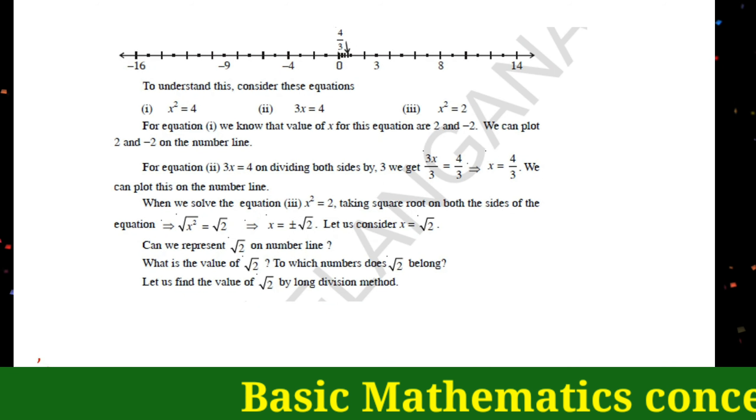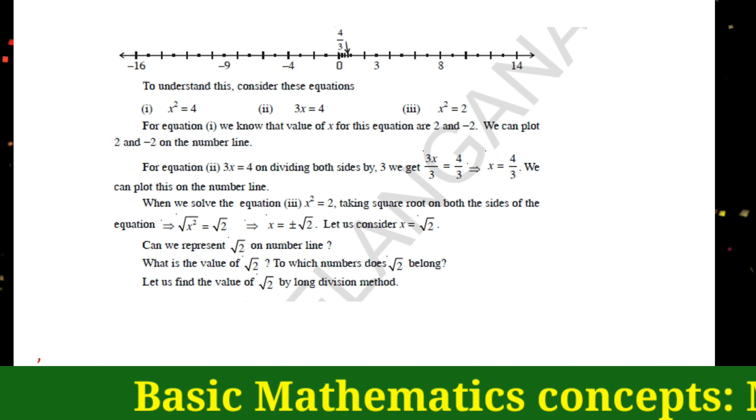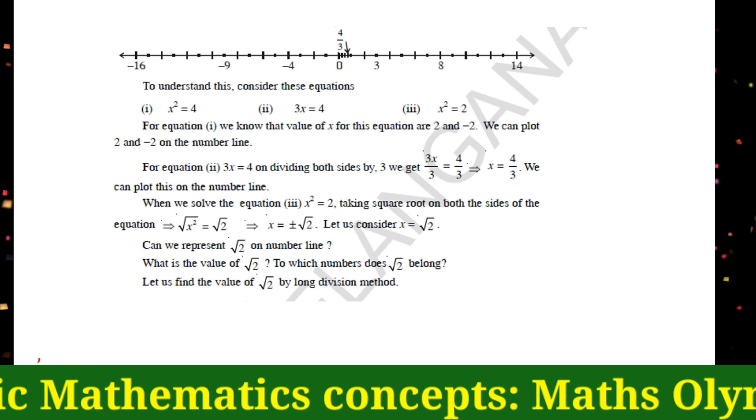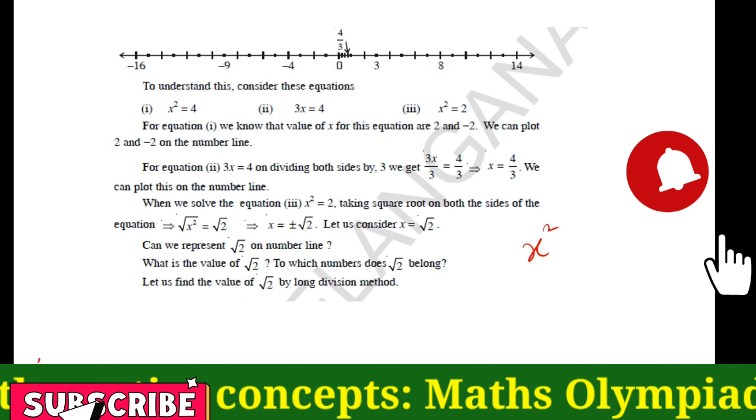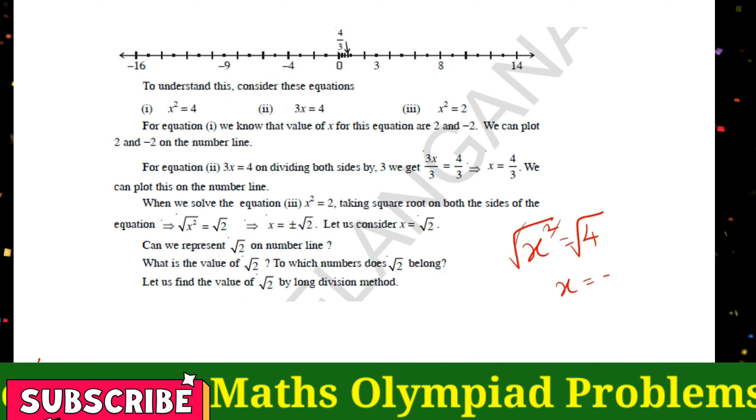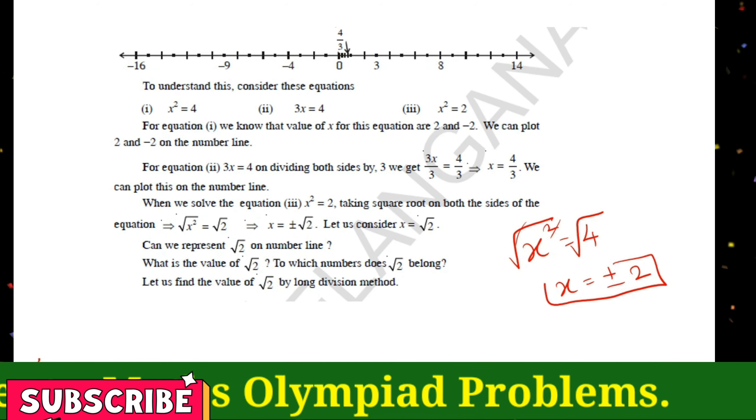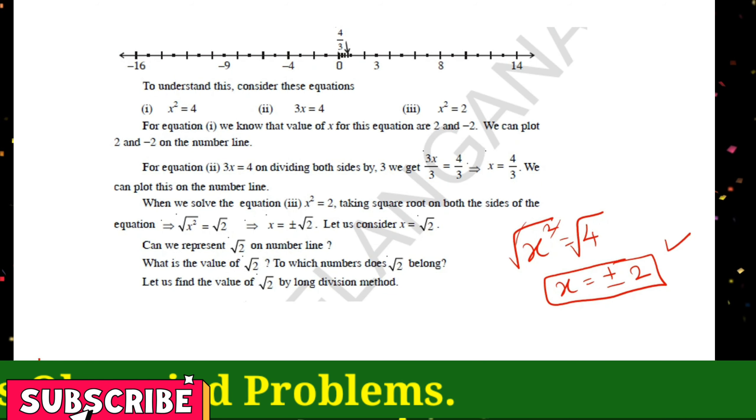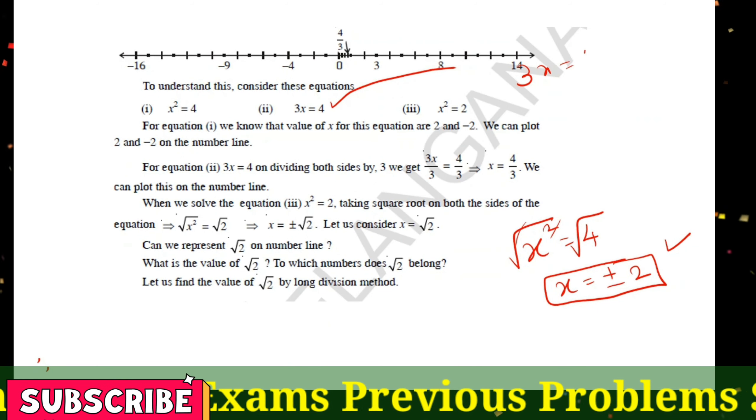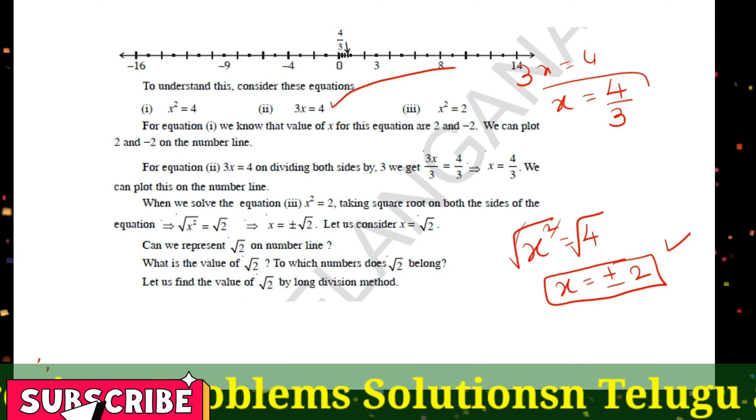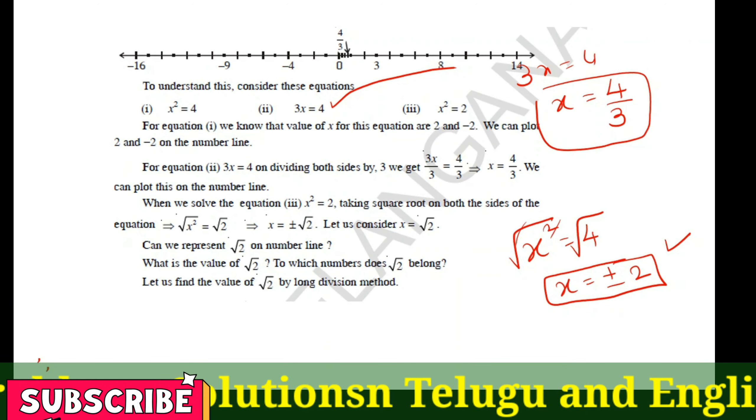In this video we will learn another concept. To understand this, consider these equations. For example, x squared equals 4. Taking the square root of both sides, x equals plus or minus 2, which is a rational number. Second equation: 3x equals 4, so x equals 4 by 3, which is also a rational number.